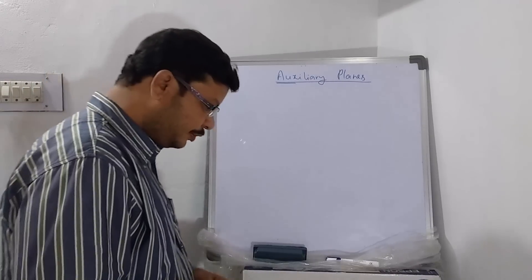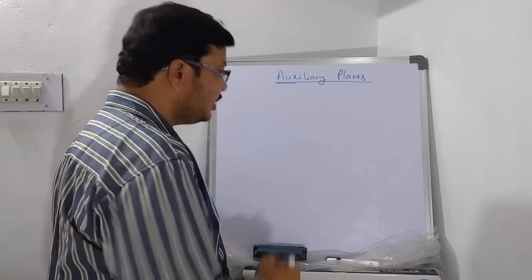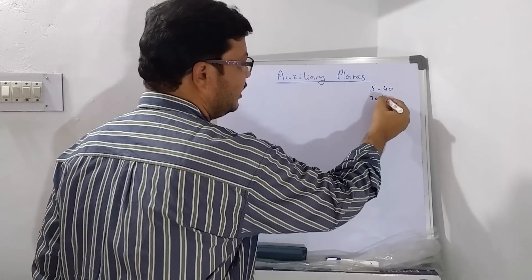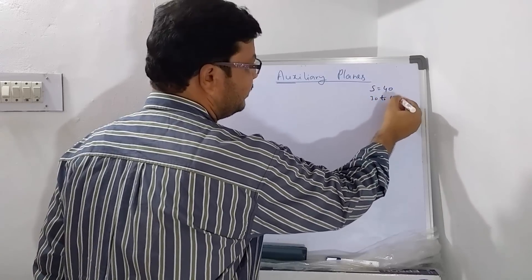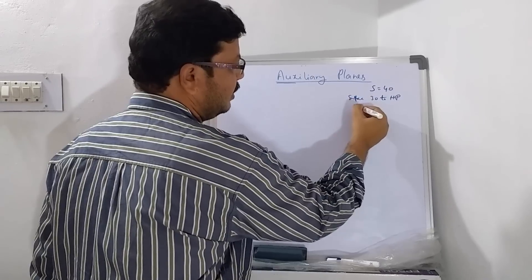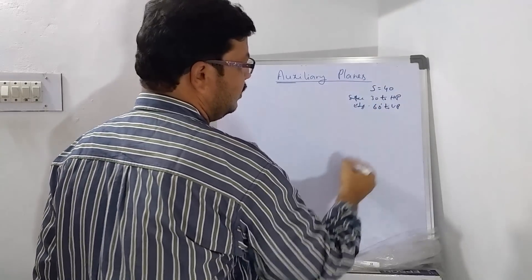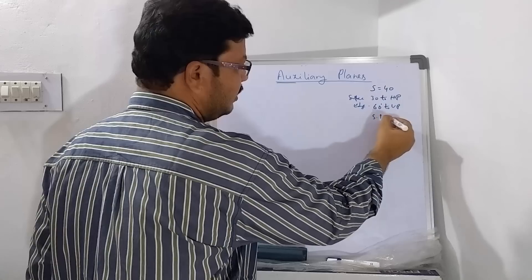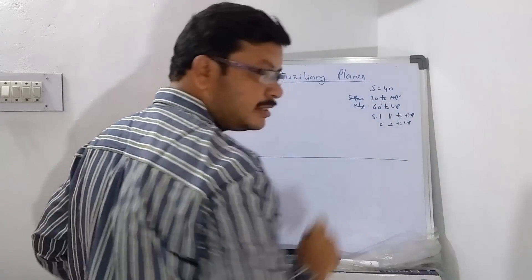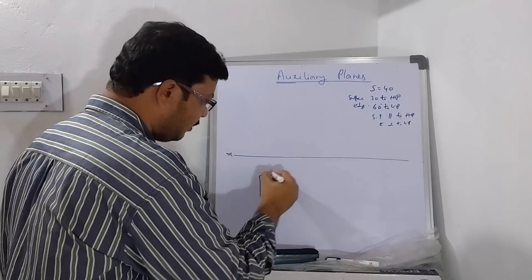The pentagonal plane has a side of 40 mm. It is inclined 30 degrees to HP, and the surface is inclined 60 degrees to HP. That means in the simple first stage, you have to keep it parallel to HP. As the surface is parallel to HP, you can see the true shape and size in the top view.